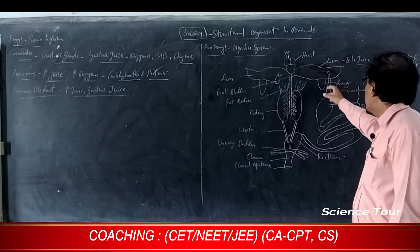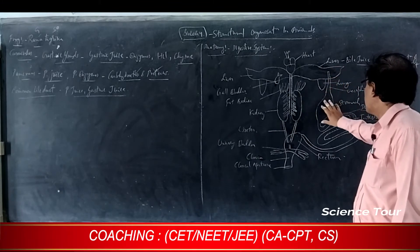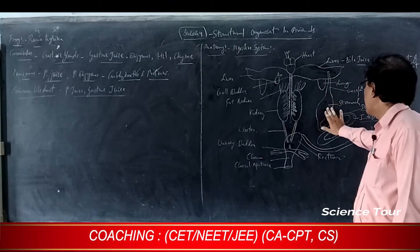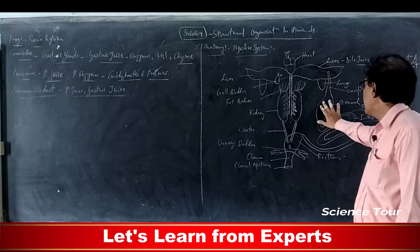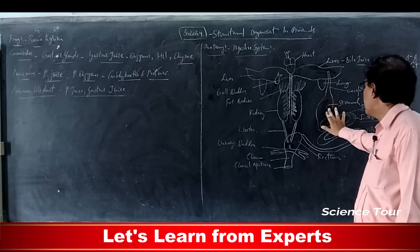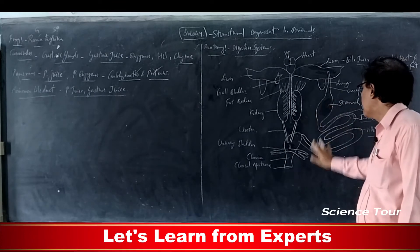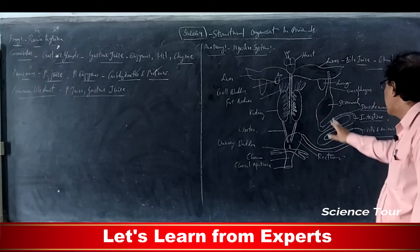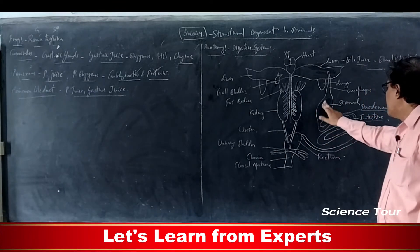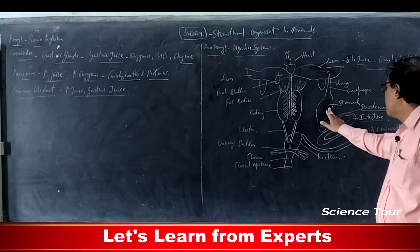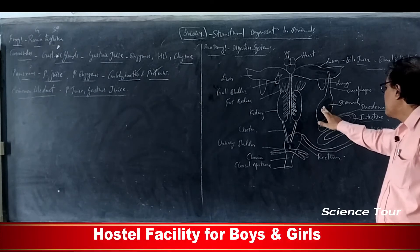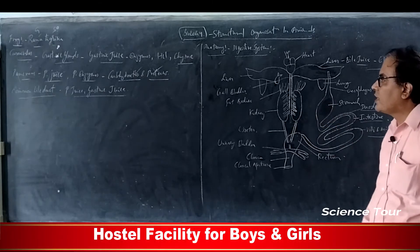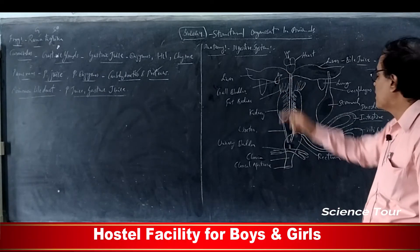Food passes through the mouth, esophagus, and into the stomach. Gastric glands in the stomach wall secrete gastric juice containing HCl, which helps for digestion. Partially digested food — called chyme — passes from the stomach into the intestine.